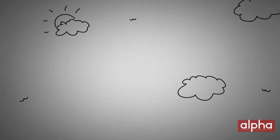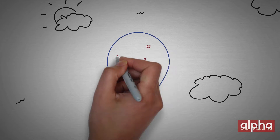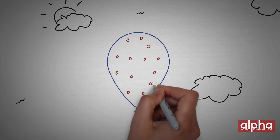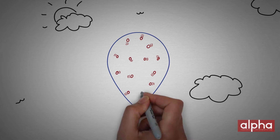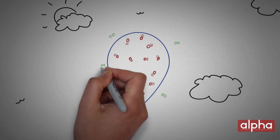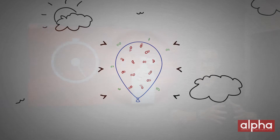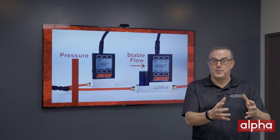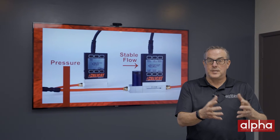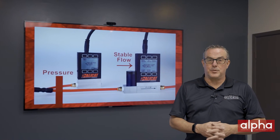A good example of this is if you've ever blown up a balloon inside your house and then taken it outside in colder weather — that balloon shrinks, or the volume shrinks based on the temperature. That's basically volumetric flow.